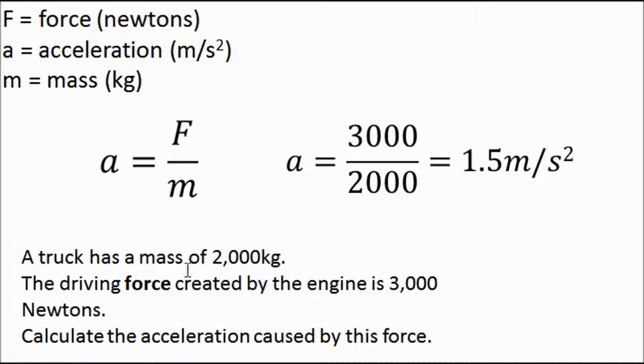Well, it tells you the mass and it tells you the driving force. So it's force over mass. A equals F over M. Force is 3,000. Mass is 2,000. So it's 1.5 meters per second squared. So really, all you need to do with either of these two equations is just choose the right one. If the question gives you the force and the mass, do this one. And if the question gives you the start speed, the finish speed, and the time, use the other one. And that's all there is to it.